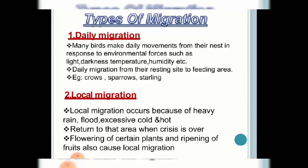The next type is local migration. Due to natural calamities like heavy rains, floods, excessive heat, or cold, birds leave their native area and move away for some time. Once the crisis is over, they return to their native place. For example, during spring, flowering plants bloom and maximum food is available near those plants, so birds nest near flowering plants. Once flowering stops, the birds move back to their native nests. These birds are called local migrants.